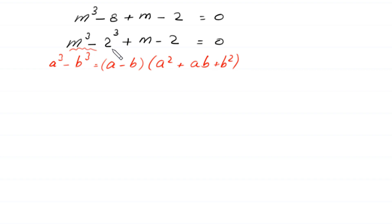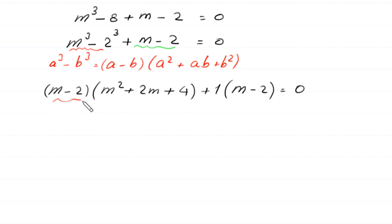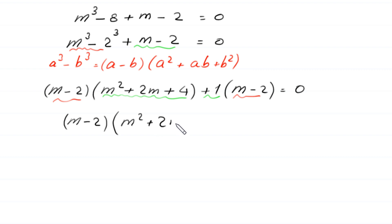This m cubed minus 2 cubed will become m minus 2 times m squared plus 2m plus 4. From these two terms plus m minus 2, we can factor out plus 1 as a common factor, leaving m minus 2 in brackets, equal to 0. This gives m minus 2 times m squared plus 2m plus 4 plus 1 equal to 0.